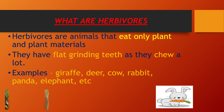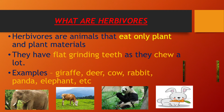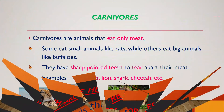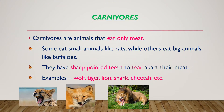What are carnivores? Carnivores are animals that eat only meat. Some eat small animals like rats, while others eat big animals like buffaloes. They have sharp pointed teeth to tear up their meat. Examples: wolf, tiger, lion, shark, cheetah, etc.